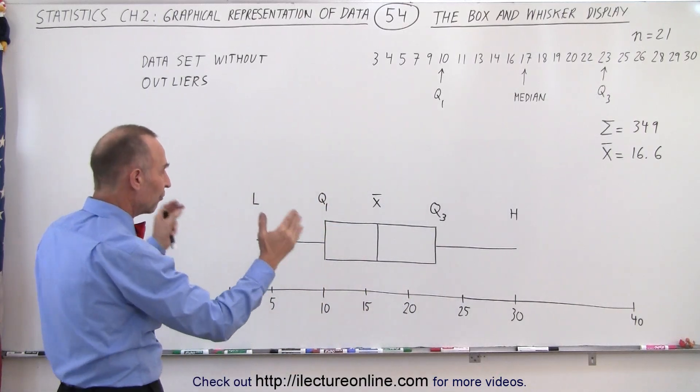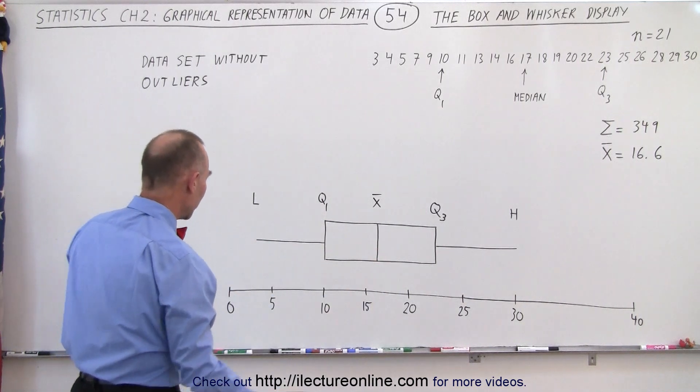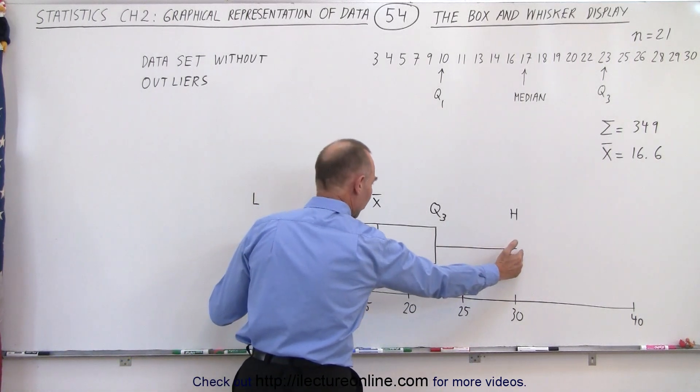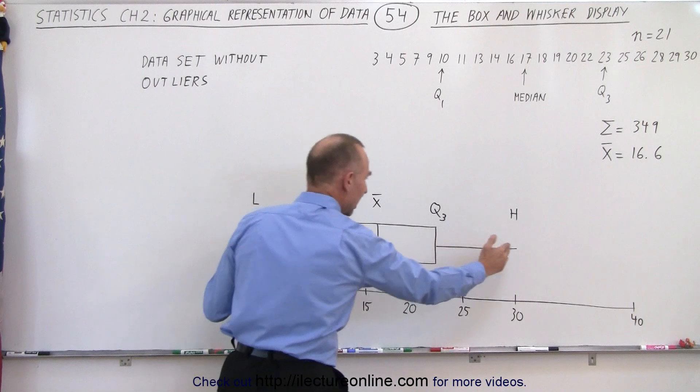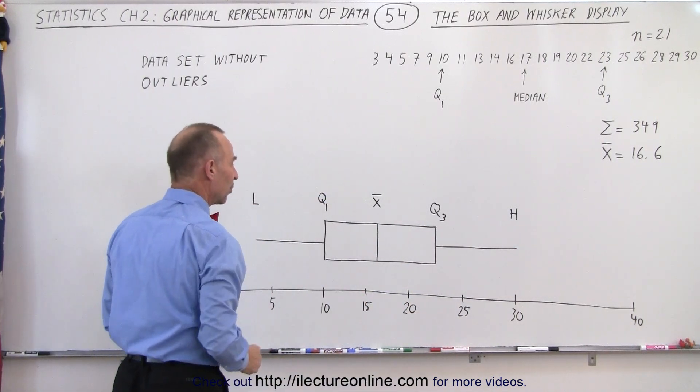And so what this display tells you visually really quick, based upon a number line, for example, that the range of data falls right here between 3 and 30, so you can clearly see that visually. The average is at 16.6.